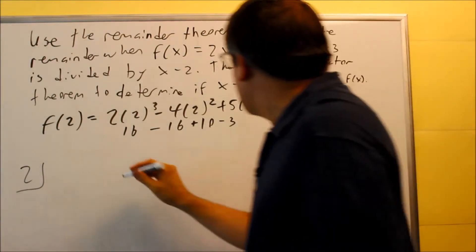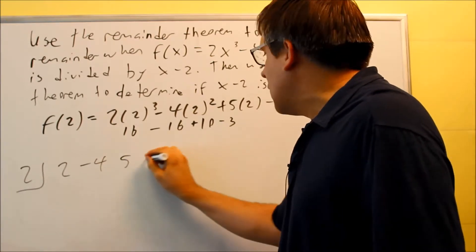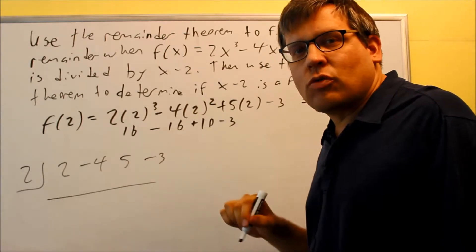No terms are missing, so I'll put those in as is. 2, negative 4, 5, and negative 3. I'm going to go through this synthetic division, and let's see what we get for the answer.